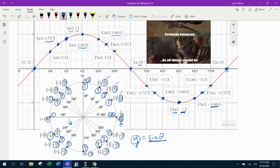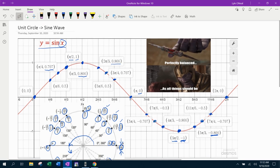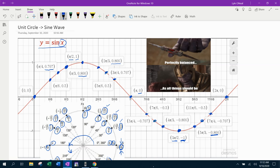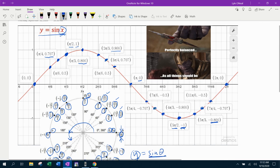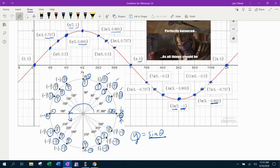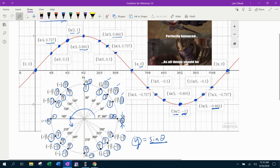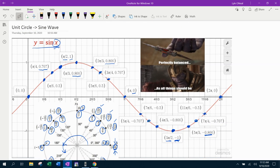So do you see that as you walk around the unit circle, as your theta increases, which corresponds on the x-y coordinate system, that's your x value. As your x increases, your y values correspond to your unit circle values. And that is how the sine wave is produced from the unit circle. They're inextricably linked. Perfectly balanced, as all things should be.